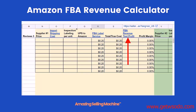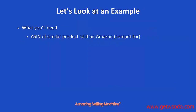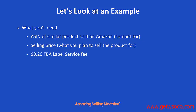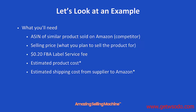You'll notice the column heading 'FBA Revenue Tool Profit' is a clickable link that takes you right to the calculator. Before using this tool, you'll need: the ASIN or unique identifier of a competitor's product similar to yours, the selling price you plan to sell at, the $0.20 FBA label service fee, the estimated product cost, and the estimated shipping cost from the supplier.